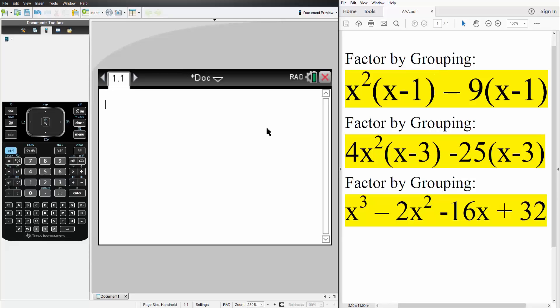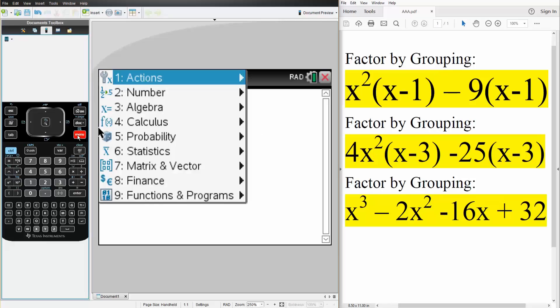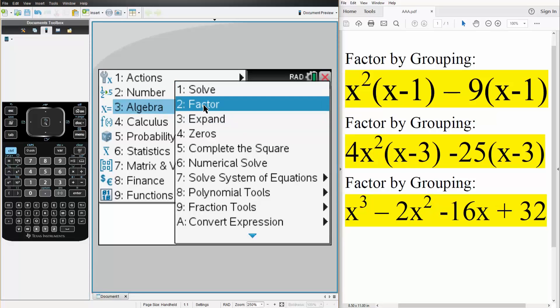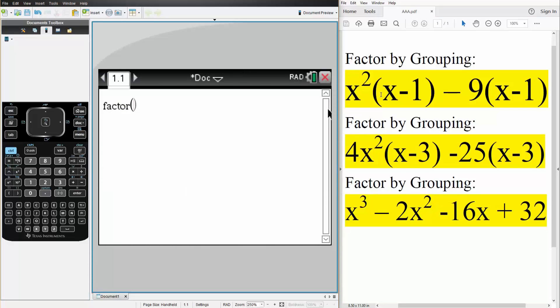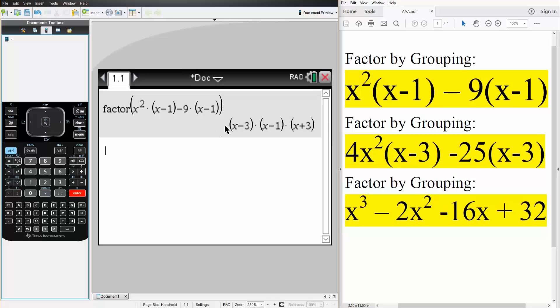But on the TI, you don't need to worry about that. If we hit menu, 3 algebra, and we hit 2, factor, we simply write what we have. So we have x squared times x minus 1 minus 9 times parentheses x minus 1 like this. And we simply hit enter, and this would be the final answer.